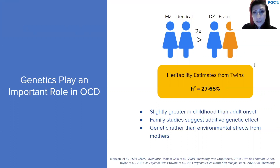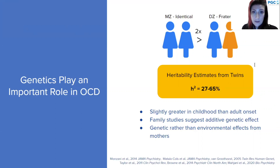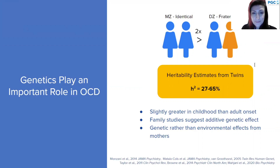We also know that genetics play an important role in OCD. The concordance rate in monozygotic twins is consistently twice that of dizygotic or fraternal twins, and heritability estimates from twin studies range between 27 and 65%, with slightly greater estimates for childhood onset rather than adult onset OCD. Recent evidence from family studies provides further evidence for the additive genetic effect, with effects from mothers tending to be genetic rather than environmental.